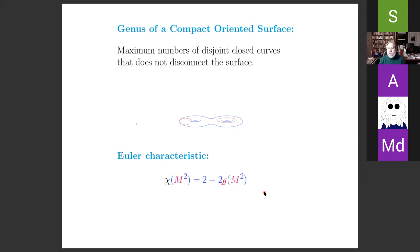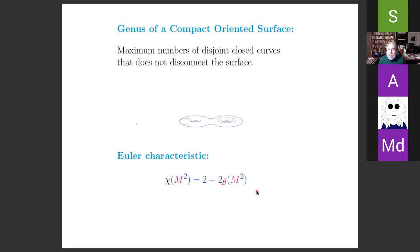Euler described this initially in a very different way — I'll mention something about that later. Obviously, if you know the genus you know the Euler characteristic, and vice versa; they determine each other.